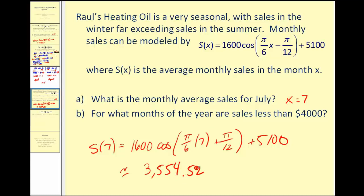For the next part, for what months of the year are sales less than four thousand dollars? I think what we'll do this time is look at this graphically. So we'll graph this function and determine for which x values it's below the line y equals four thousand.